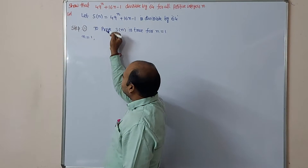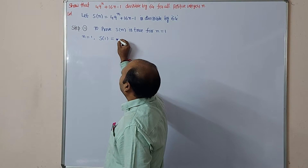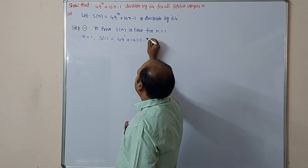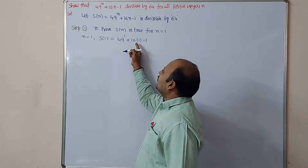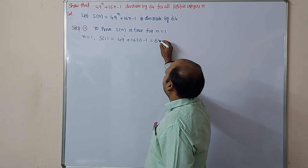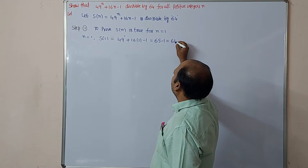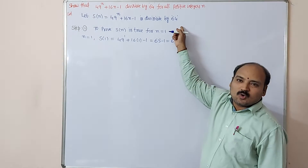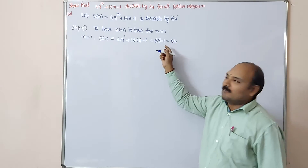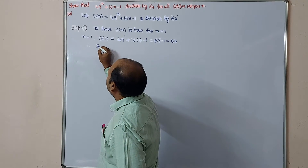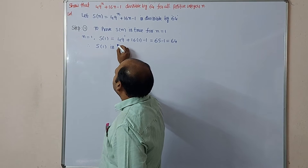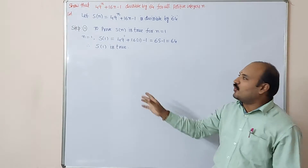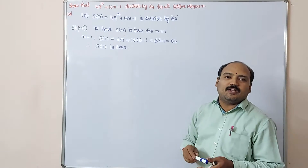So substituting n is equal to 1: S of 1 is equal to 49 power 1 plus 16 into 1 minus 1, which is 49 plus 16 minus 1, equals 64. So S of 1 equals 64. 64 is divisible by 64 — it is a multiple of 64. Therefore S of 1 is true.